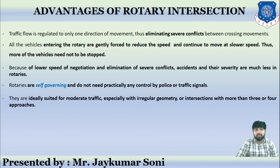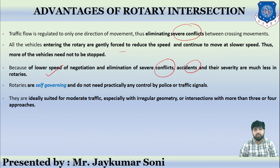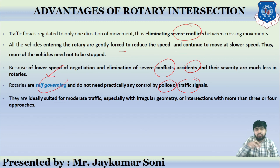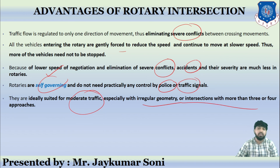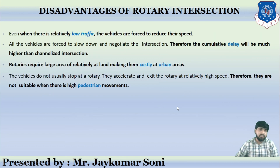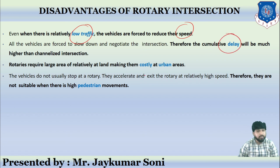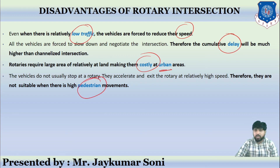Advantages of rotary intersections include: traffic flow is regulated to one direction of movement, eliminating severe conflicts; all vehicles entering the rotary are gently forced to reduce speed, reducing conflicts and accidents; no police or traffic signals are needed because rotaries are self-governing; and they are ideally suited for moderate traffic, especially at locations with irregular geometry or more than three or four approaches. Disadvantages include: vehicles reduce their speed causing possible delays; they require higher construction cost in urban areas; and they are not suitable where high pedestrian movement exists, since vehicles do not stop.